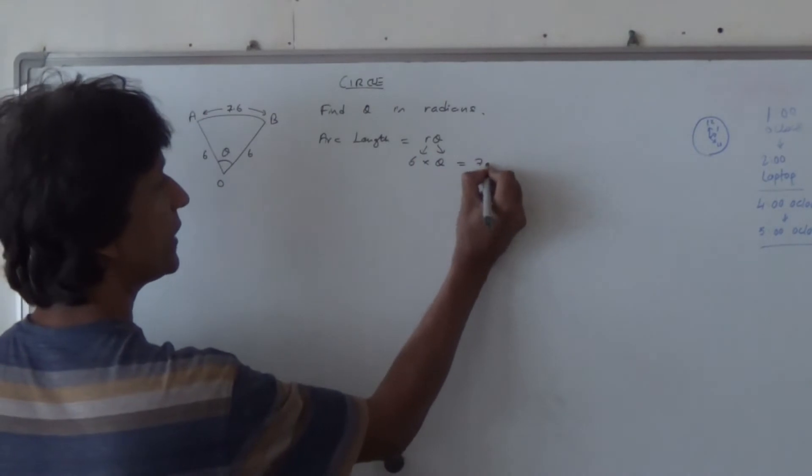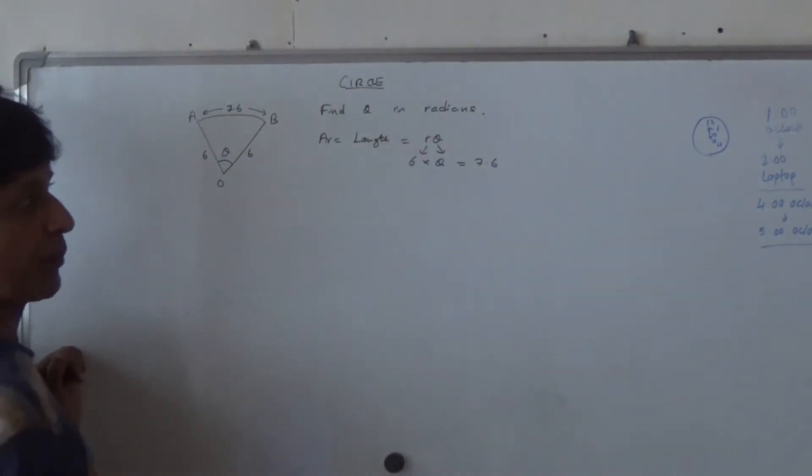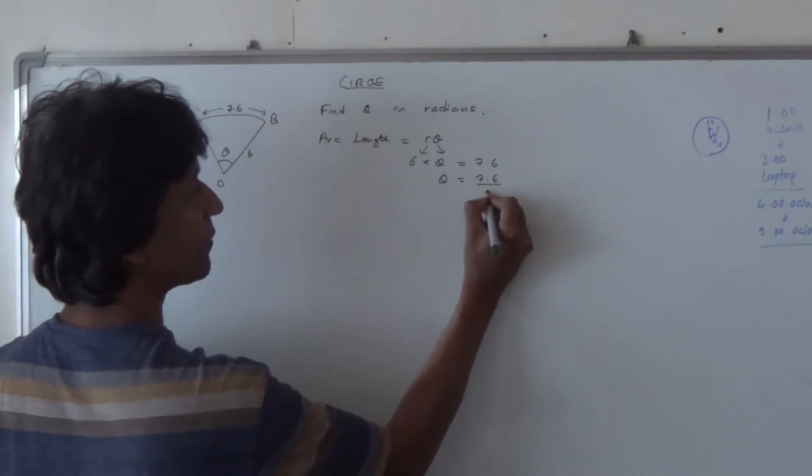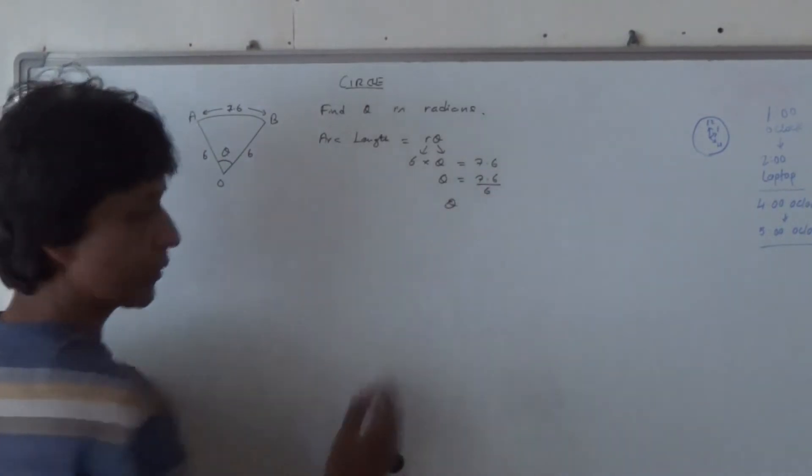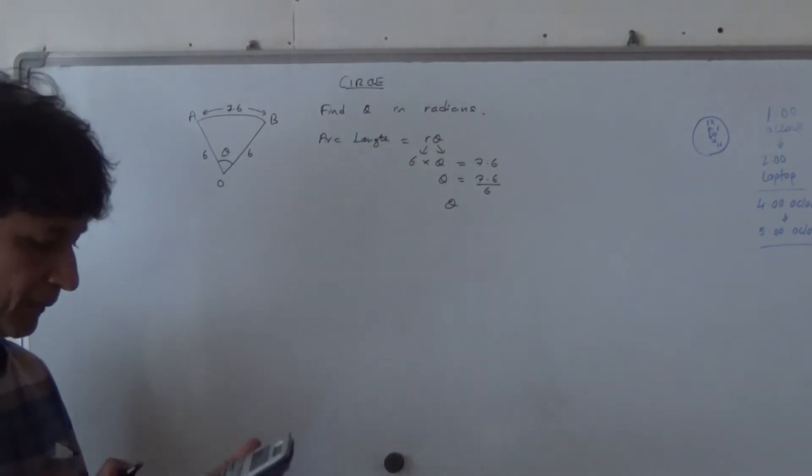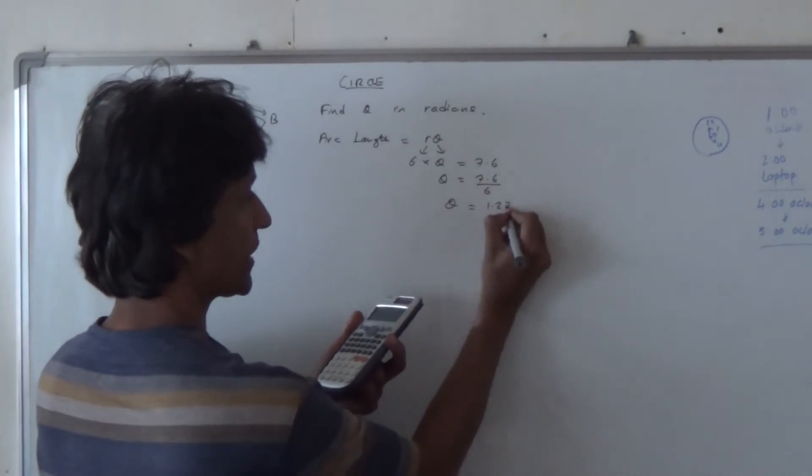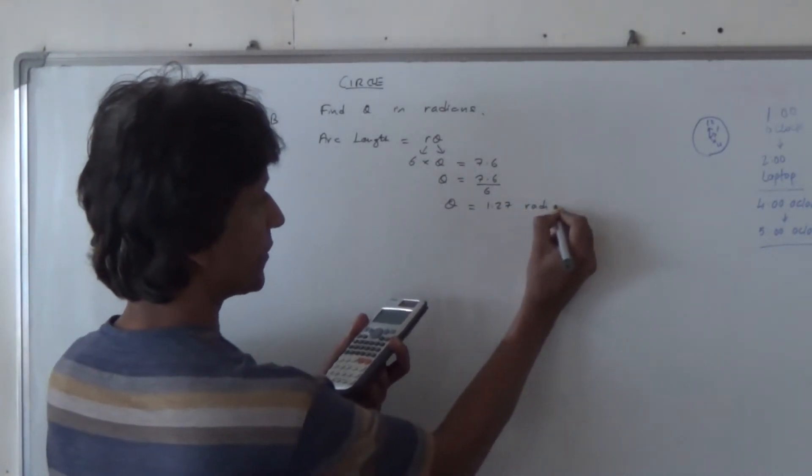And then we get the arc length, 7.6. The theta is going to be equal to 7.6 divided by 6. And so we've got 7.6 divided by 6. And that should give us 1.27 radians. That's approximately.